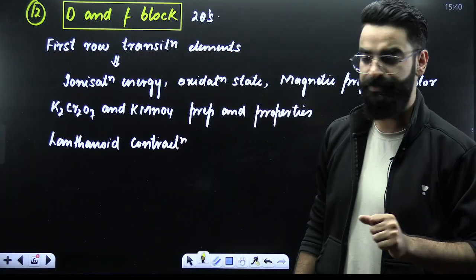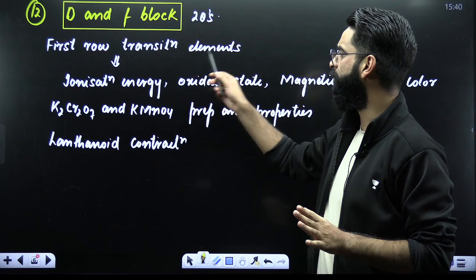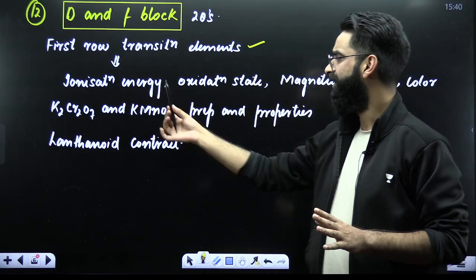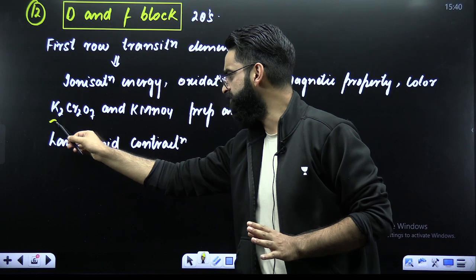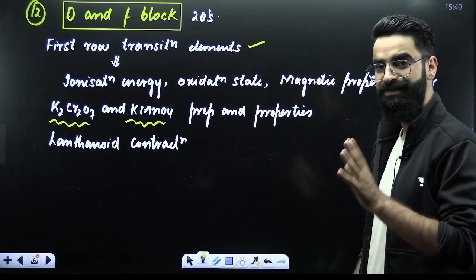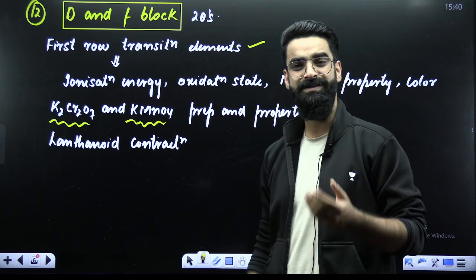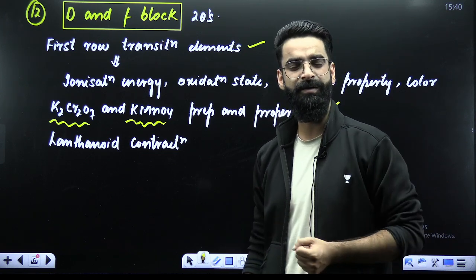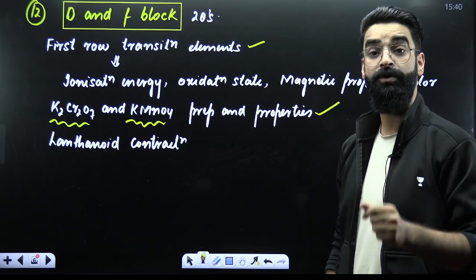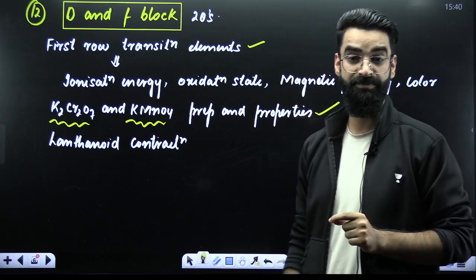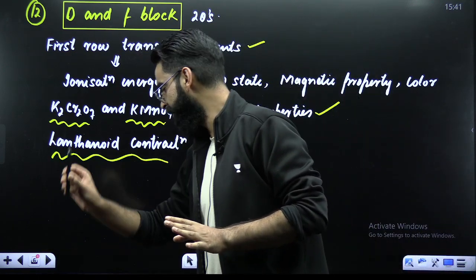For D&F block elements, you'll be getting two questions. Study first-row transition elements for ionization energies, oxidation states, magnetic properties, and their color. Two important compounds are K₂Cr₂O₇ and KMnO₄ — their preparation and properties. Also, lanthanoid contraction is again a short topic from the chapter D&F block. Tomorrow we are doing atomic structure at 7 pm — join in.